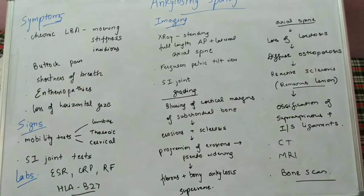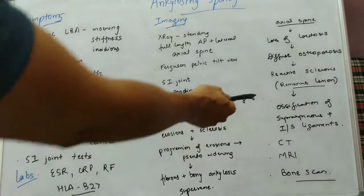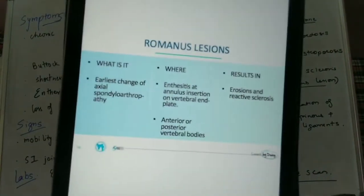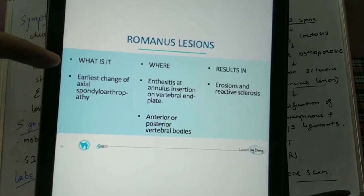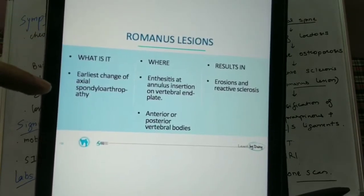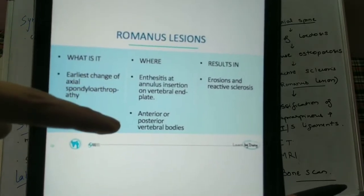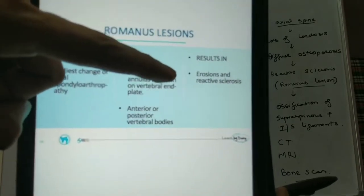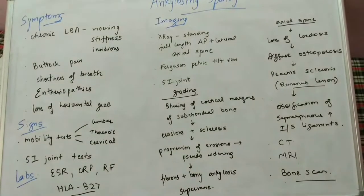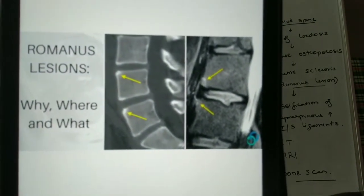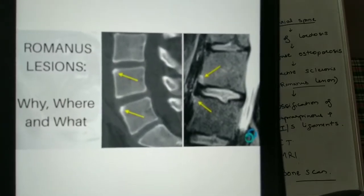There are various named lesions in ankylosing spondylitis. One is the Romanus lesion, which is basically a reactive sclerosis. The Romanus lesion is the earliest change of axial spondyloarthropathy. It occurs at the annulus insertion of the vertebral endplate, anterior or posterior vertebral body, and results in reactive sclerosis and erosion. On X-ray and MRI, it appears as reactive sclerosis at the margin of the annulus fibrosus.